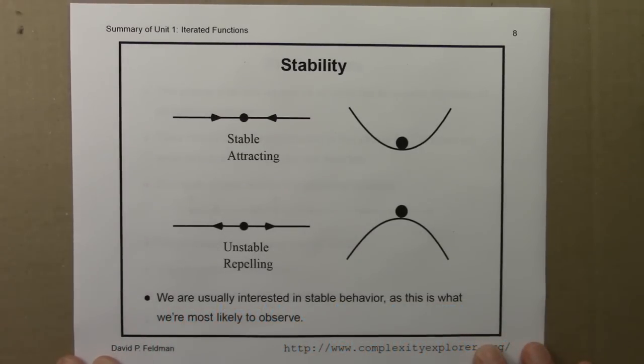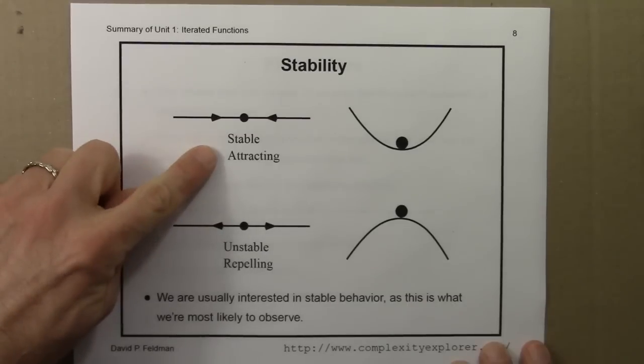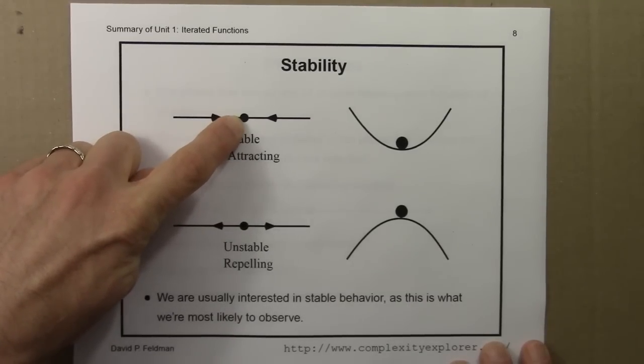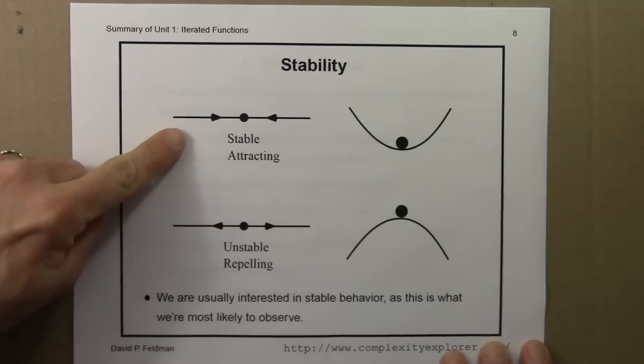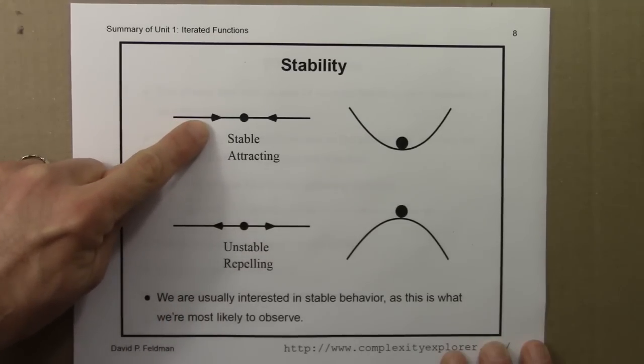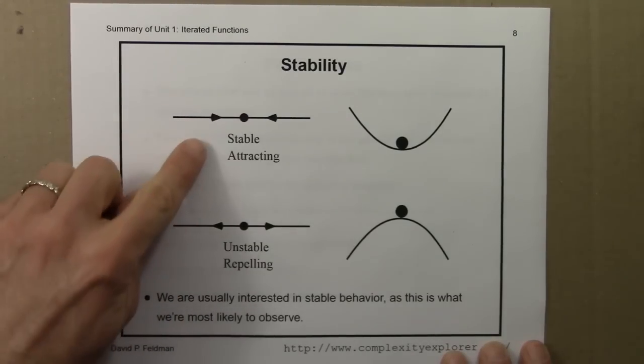The stability of fixed points can be summarized graphically in these pictures. So here's a stable or attracting fixed point. The fixed point is this point here on the line. This shows that nearby points are pulled towards it. It's an attractor.